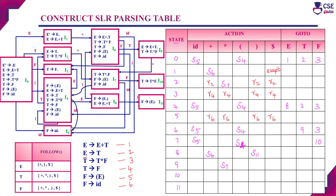States I6, I7, and I8 have no final items. For state I9, the final item is E derives E plus T dot (production 1). Follow(E) = {+, ), $}, so we enter R1 for those columns. For state I10, the final item is T derives T star F dot (production 3). Follow(T) = {+, *, ), $}, so we enter R3.